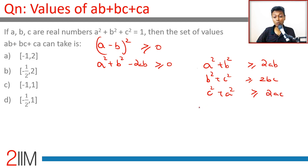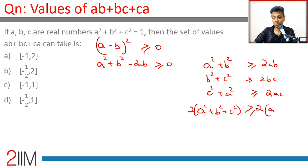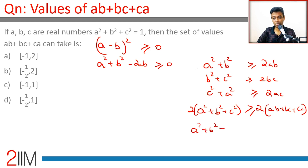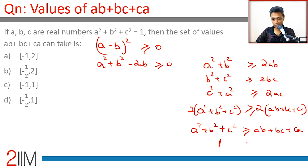Adding these three inequalities, we get 2(a² + b² + c²) ≥ 2(ab + bc + ca). This is the AM-GM inequality applied to squares. So a² + b² + c² ≥ ab + bc + ca. Since a² + b² + c² = 1, the maximum value that ab + bc + ca can take is 1.